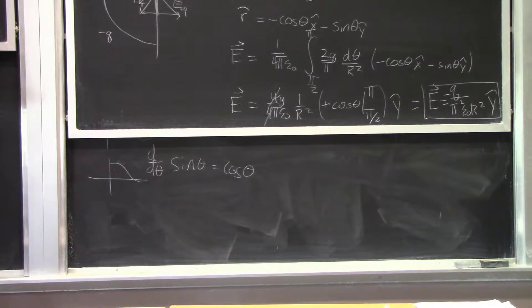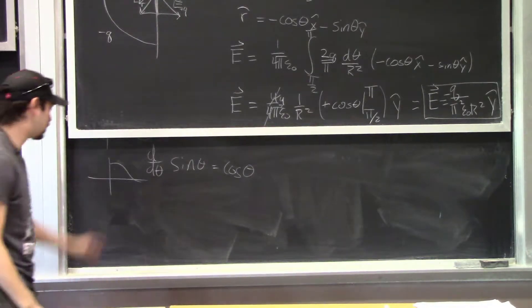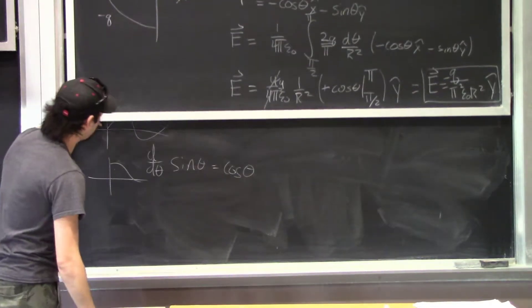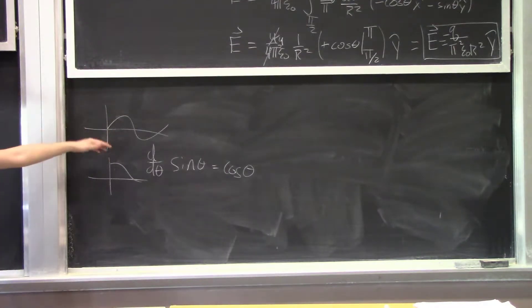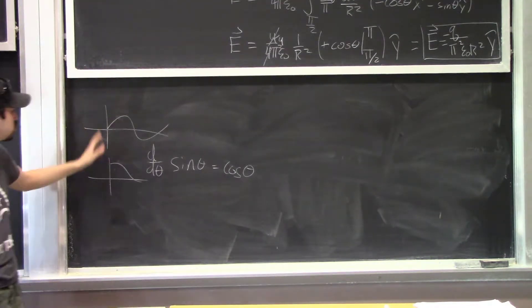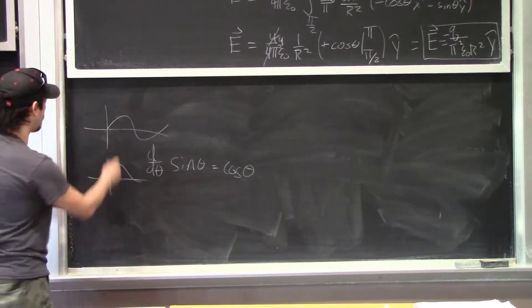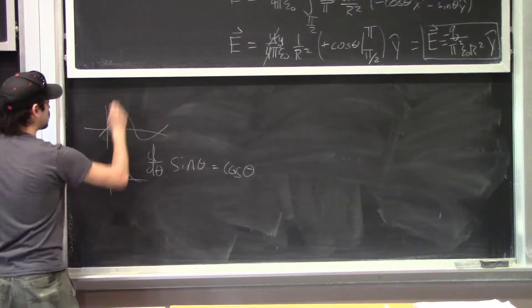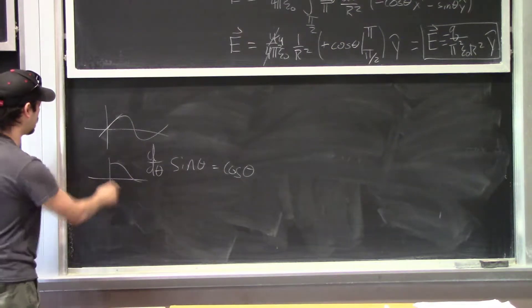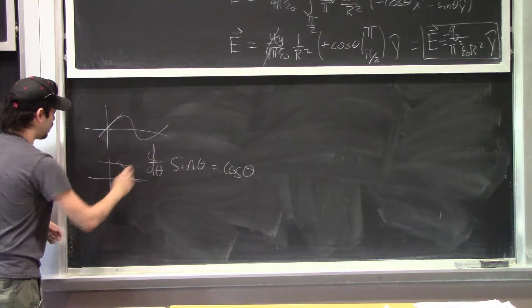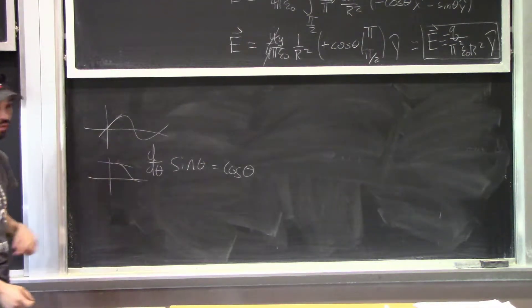A couple of takeaways: if you don't remember the derivative and integral of sine and cosine, you can always draw the plot. You know that sine's slope at zero is positive one, so its derivative is cosine. Making these physical predictions first is important — even if you do the integral and get it wrong, you can check whether the answer is consistent with the physics.